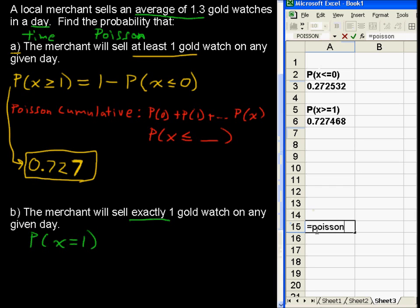Equals Poisson and then open up the parentheses. X, we have one success with the average number of successes in this time frame is 1.3. He sells on average 1.3 gold watches a day.